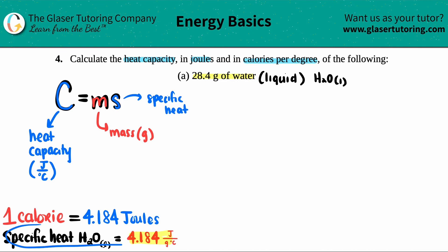In this case they're talking about liquid water, so I have to use the specific heat number for liquid water, which is 4.184. Let's plug it in. Capital C equals the mass - they already gave it to us in grams - so 28.4.